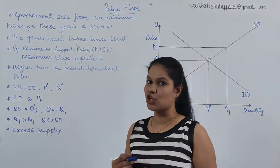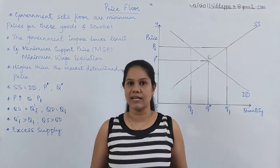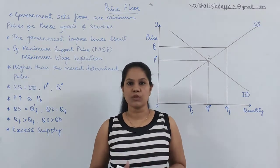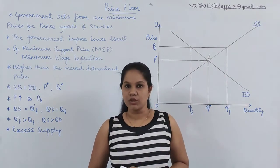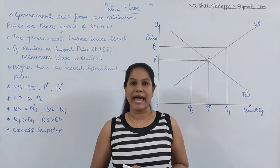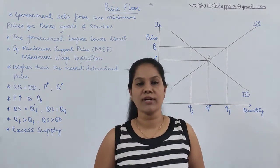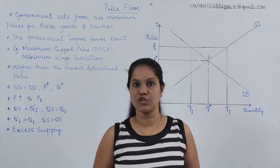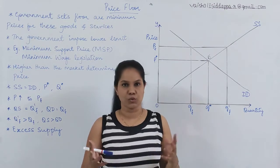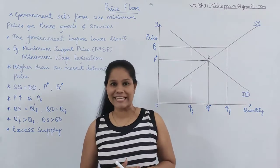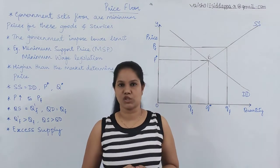Today's class is about the last topic of the 5th chapter, which is one of the applications. In the previous video, I have already covered one of the concepts which is price ceiling. So this is one of the applications — when we have demand and supply, they both are going to intersect and create an equilibrium. In the price ceiling, I gave you one example topic which is PDS, public distribution system.